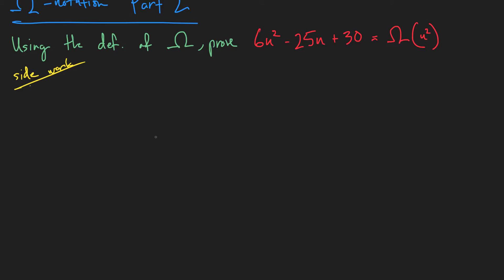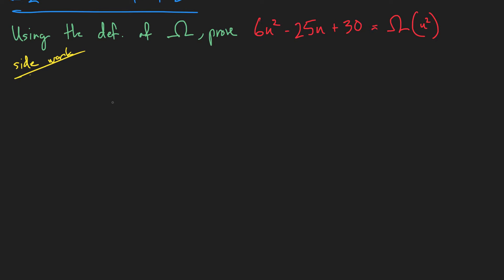Let's give ourselves some room. Let's plug this into the definition. So we have 6n squared minus 25n plus 30 is less... Oh, sorry, that's big O.